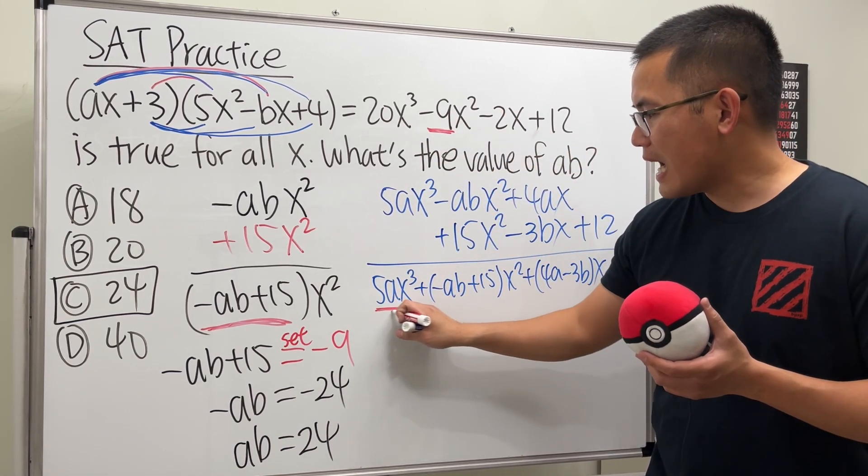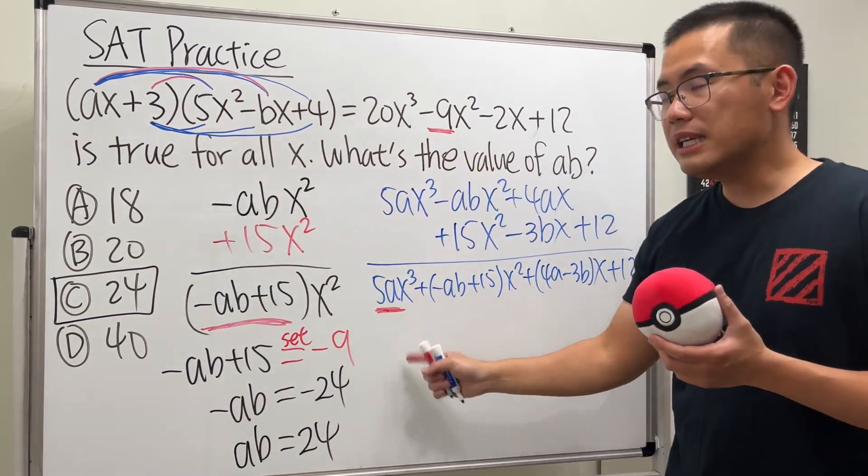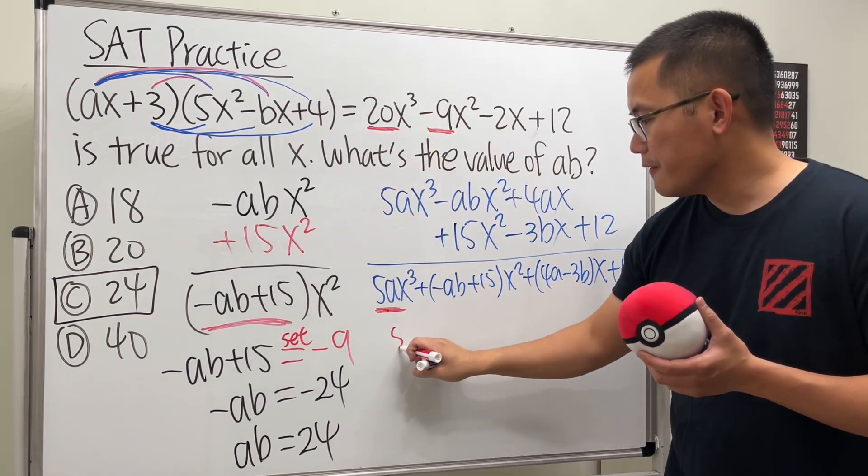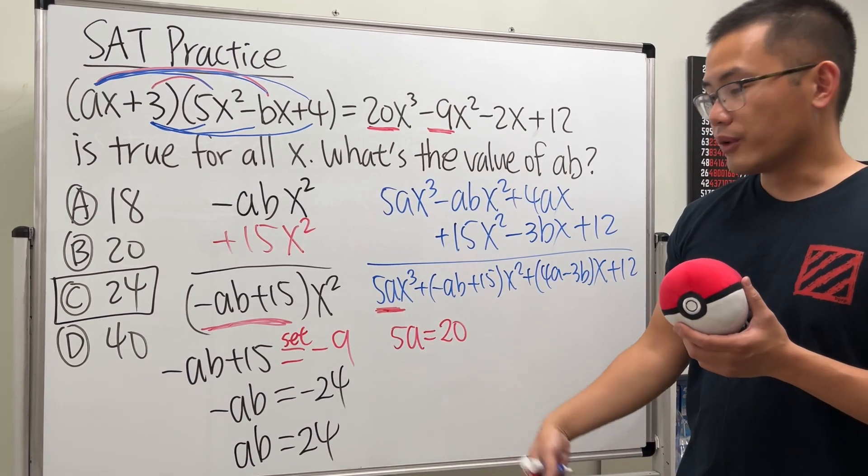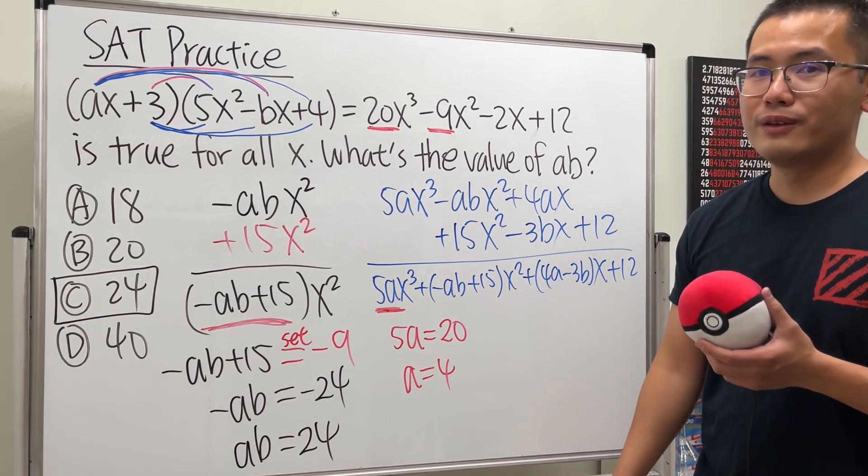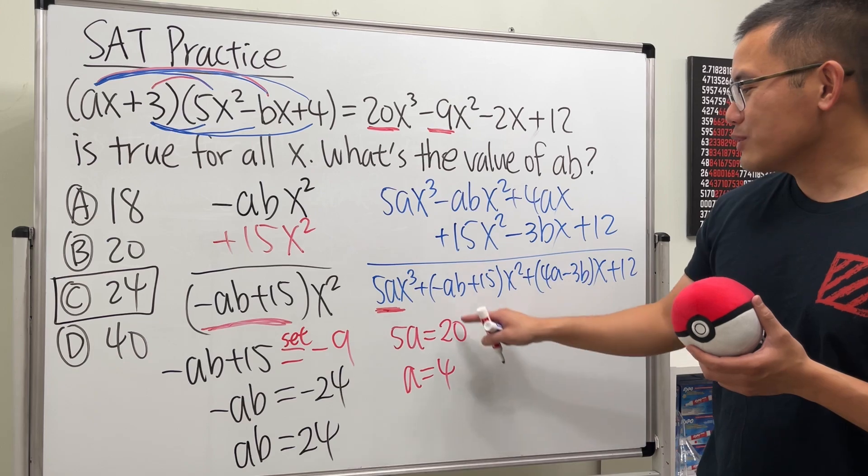when we have 5a, this is the coefficient for x to the third power from the left. It must be the same as the coefficient on the right. So, this means 5a has to be equal to 20. So, this means, divide both sides by 5, a has to be equal to 4. But we don't want that. We want ab.